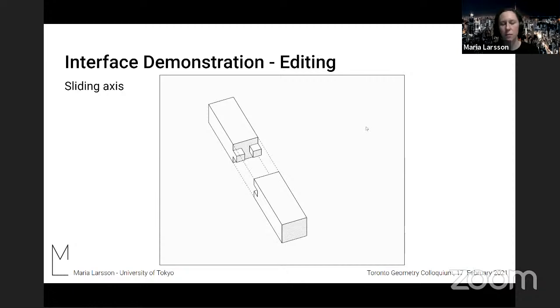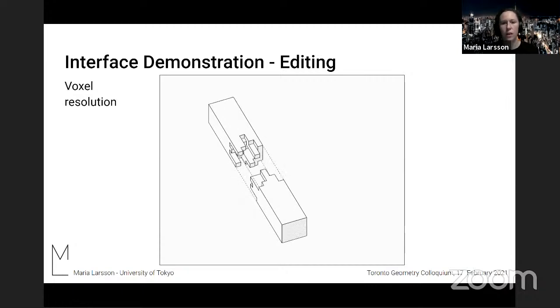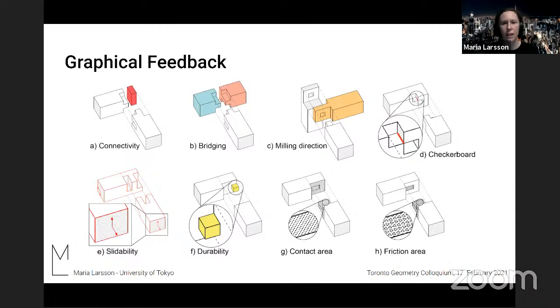You can change many parameters, such as the sliding axis, the number of timbers that are involved in the joint, the resolution of the voxels, the angle of the intersection, and the dimensions. So you don't necessarily have to have square cross sections. And then, while the user edits the joint, you receive graphical feedback about the performance of the joint. And this is the eight evaluation criteria that we consider.